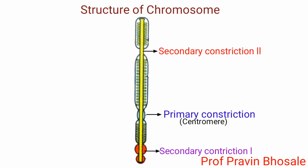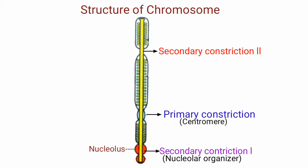Besides primary constriction, some chromosomes possess an additional one or two constrictions called secondary constrictions. At secondary constriction, the nucleolus becomes organized during interphase. It is also called the nucleolar organizer because it is necessary for formation of the nucleolus. A satellite body is attached at the secondary constriction in very few chromosomes; it is short and spherical.